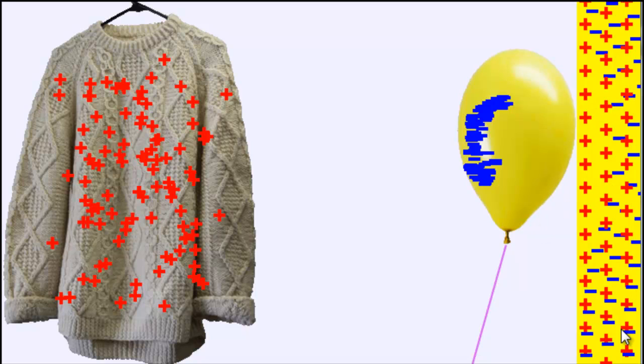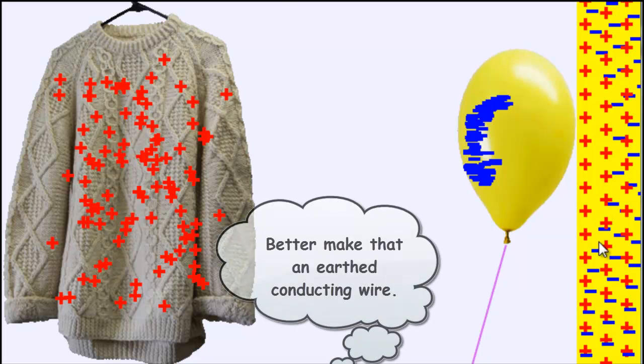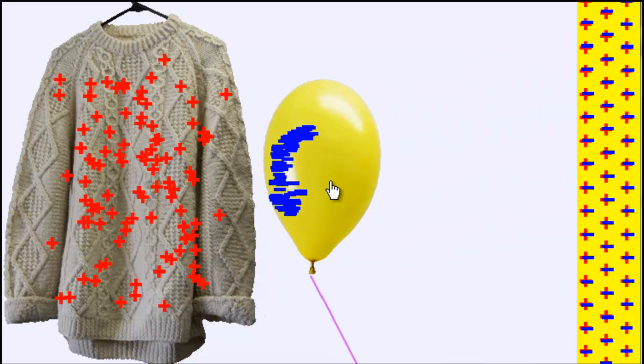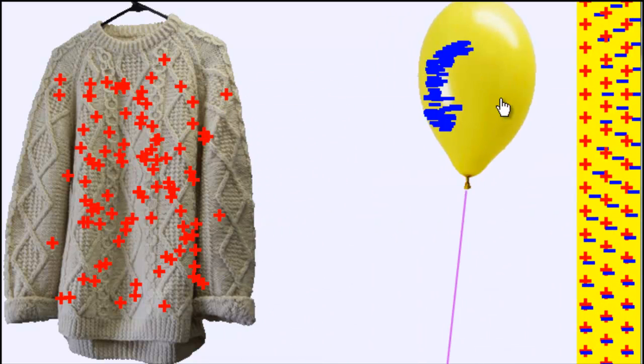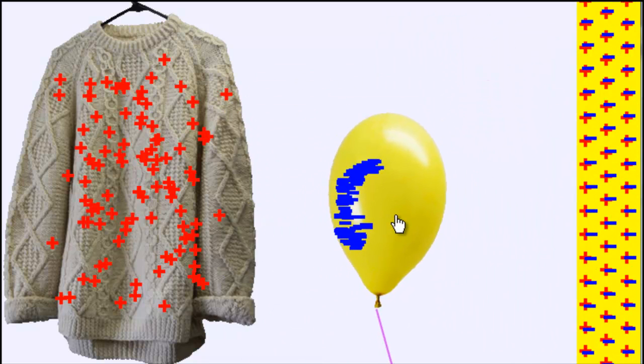If I was to attach a conducting wire to the wall now, these negative charges, some of them, would be able to escape. If I then cut the wire and move the balloon back away, the wall would have lost some of the electrons, and would be positively charged. This is called charging by induction.